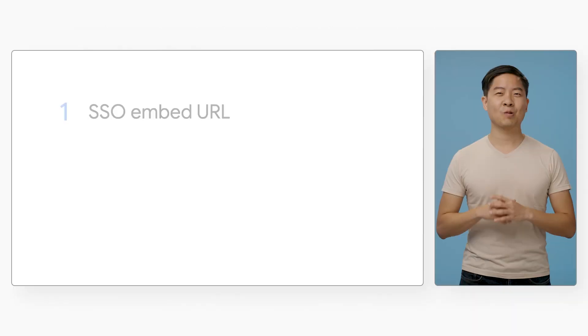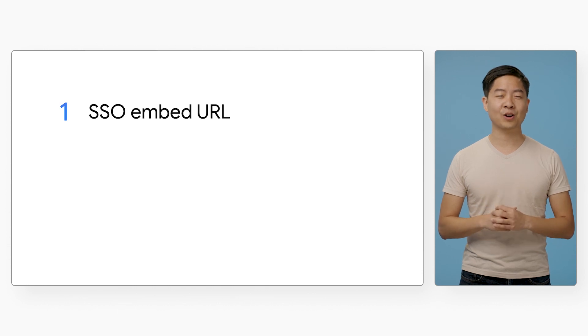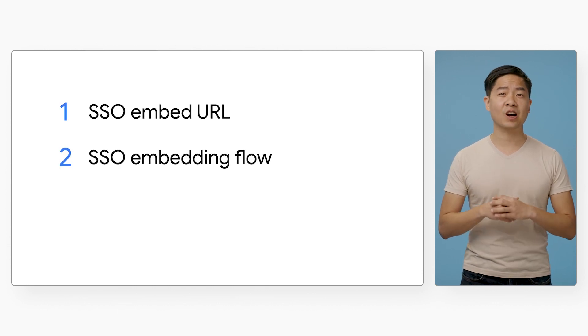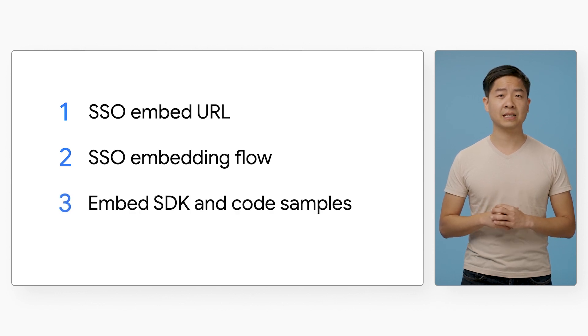Good job, folks. We have walked through the SSO Embedding with the Embed SDK option. We outlined what parameters are needed for your SSO embed URL, an example architecture of the SSO embedding flow, and how you can leverage the Embed SDK and our code samples to make implementation easier. Check out our Getting Started documentation linked below for more details. Look forward to more videos in this series on embedding Looker. See you next time.